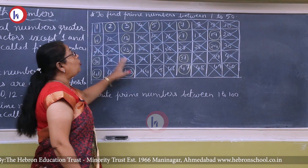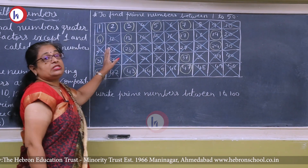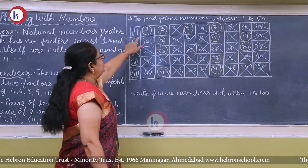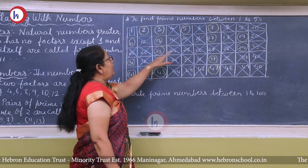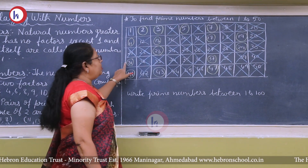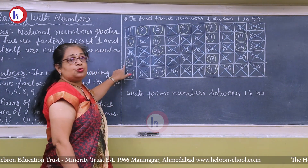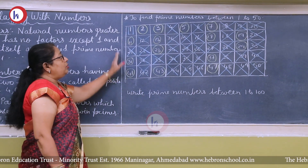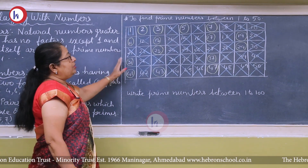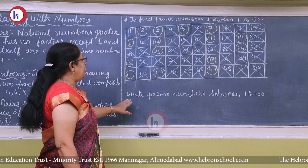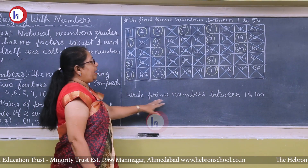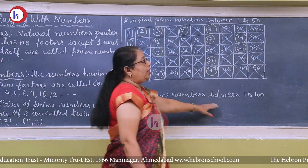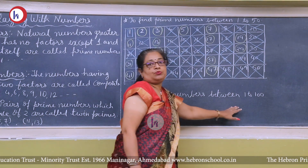Numbers marked with a cross are all composite numbers, meaning they have more than two factors. Numbers circled are all prime numbers, which have only two factors. In this manner you can form a table and write prime numbers between 1 to 100 in your class workbook.